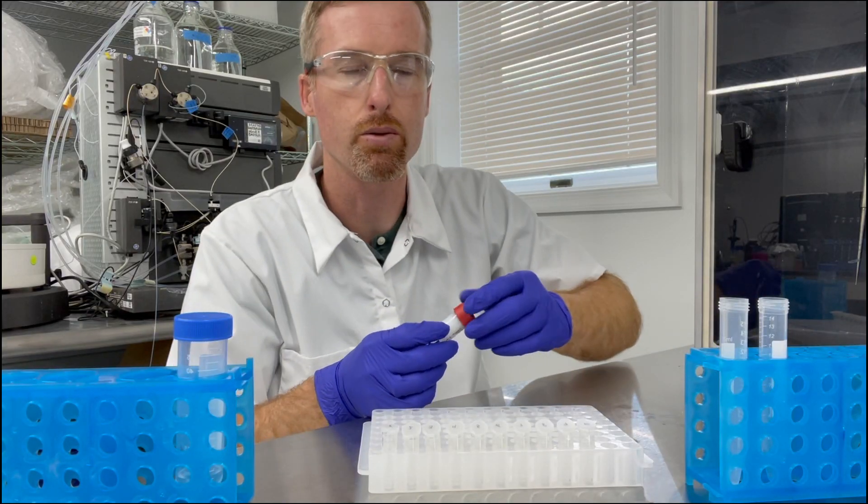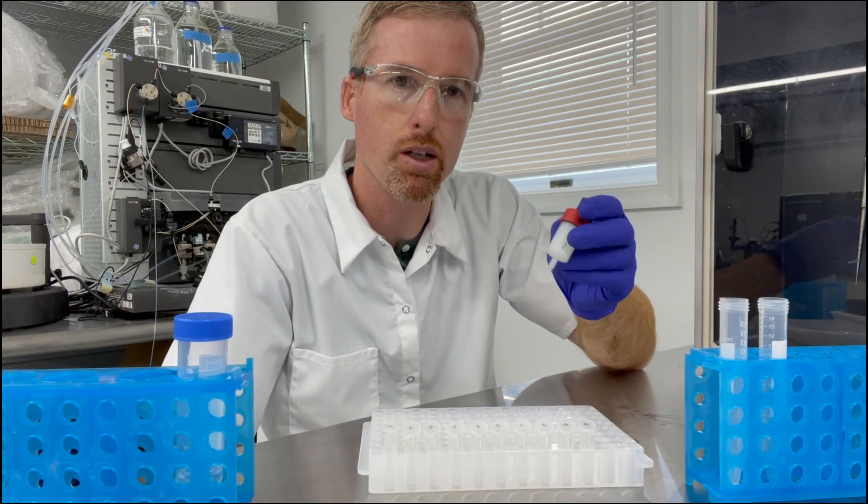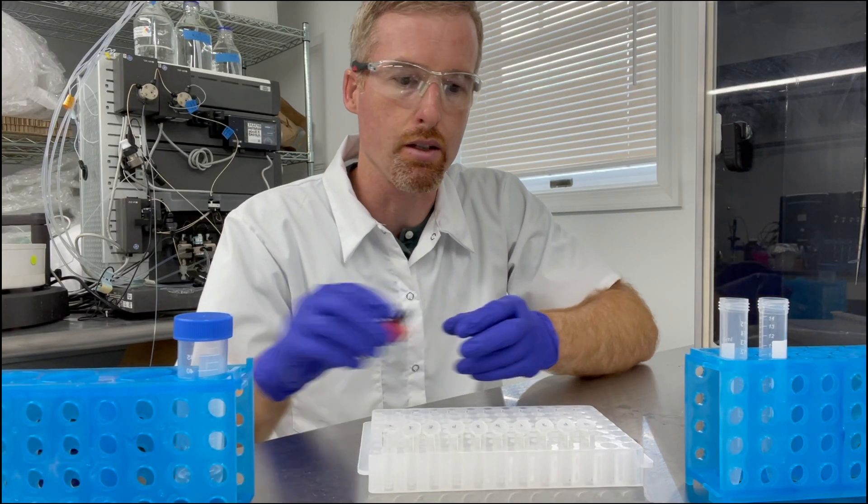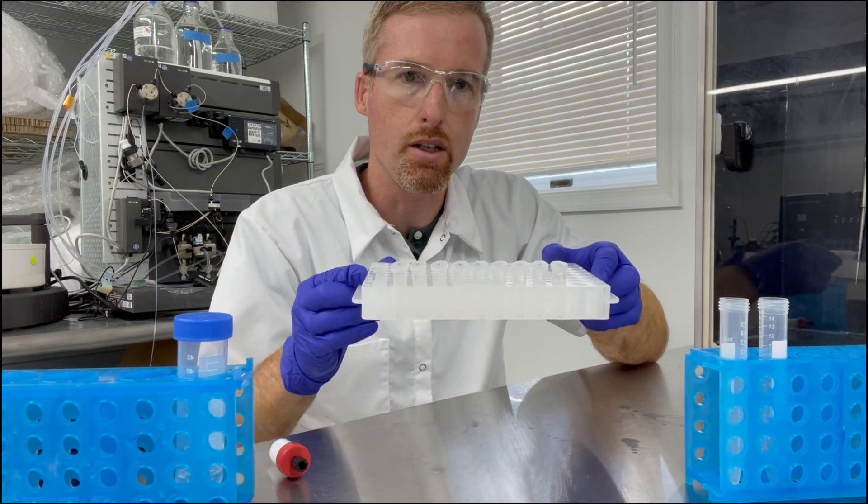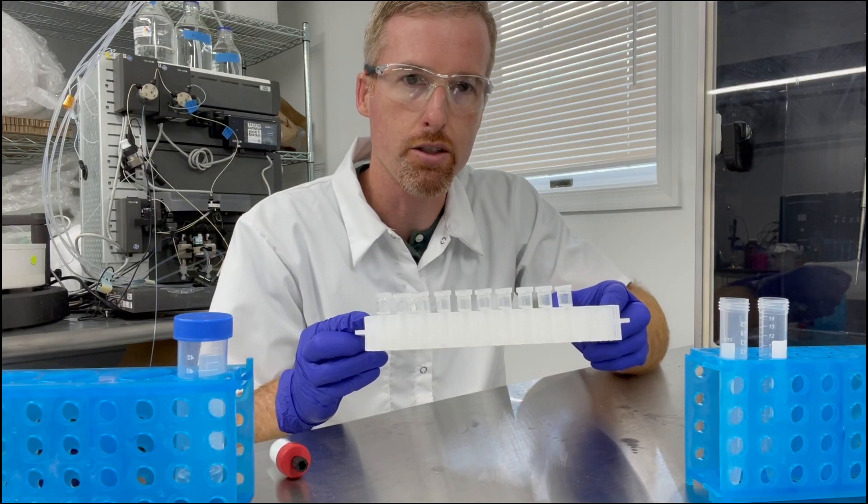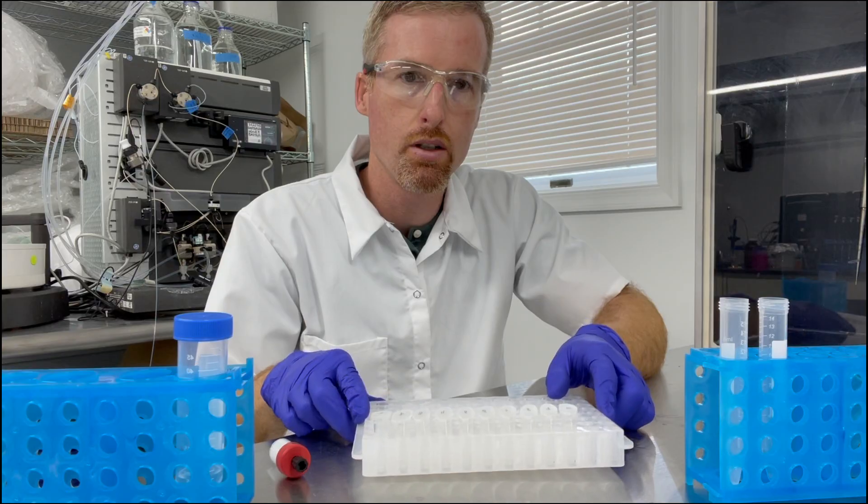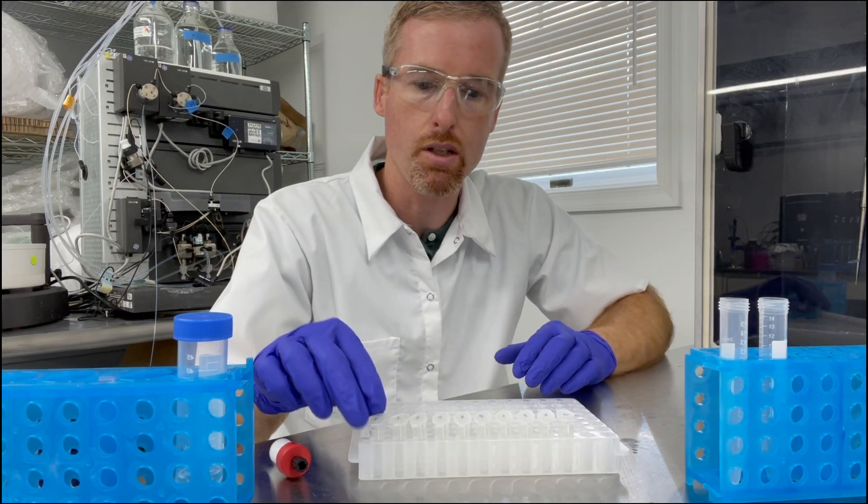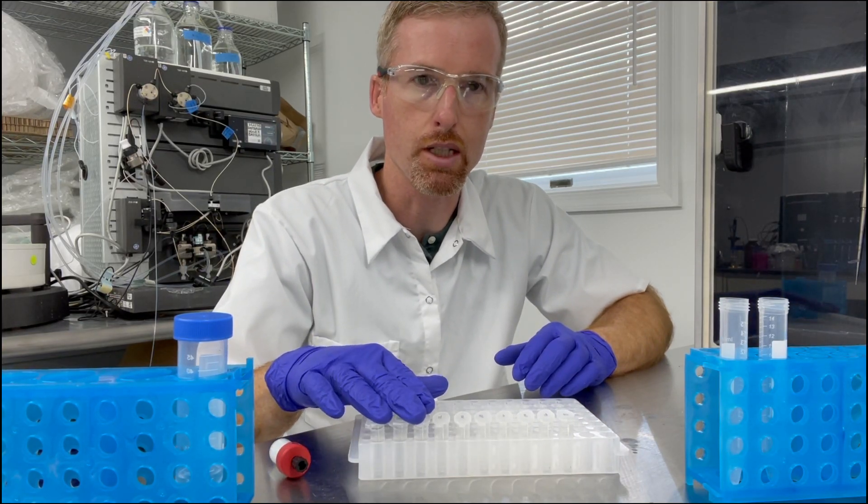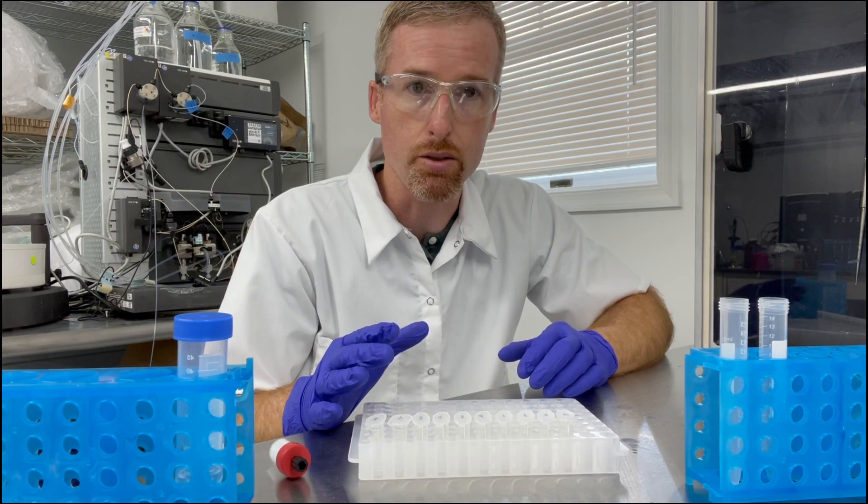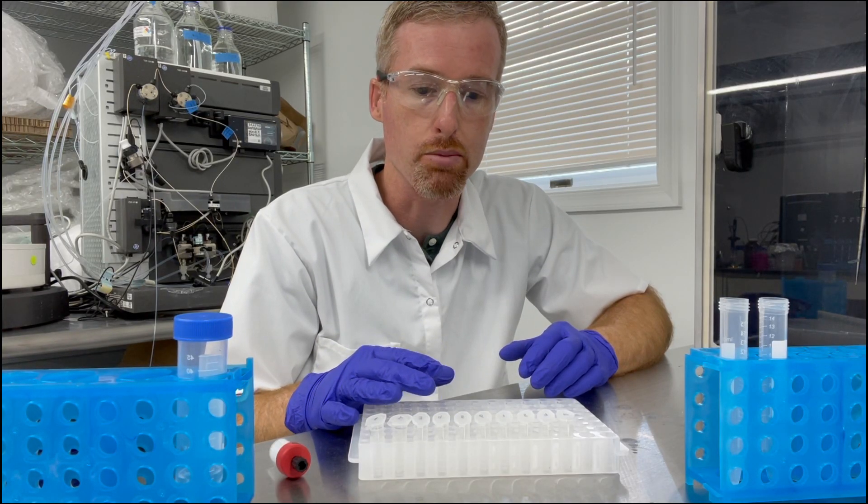Okay, so the column has been equilibrated with buffer A and I have here 10 one-mil fractions of protein that I eluted from nickel agarose.